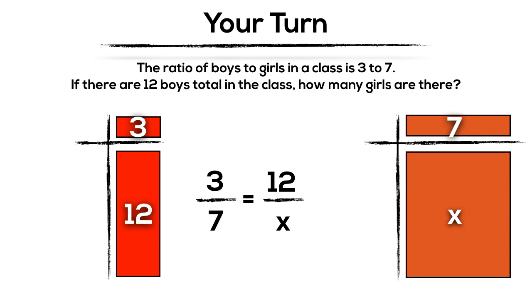So if we set these up here, we can see that our ratio of 3 to 7 is represented as factors of two separate area models, and we know that if there's 12 boys total, that's what our product will be for that first area model.